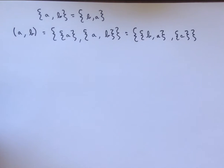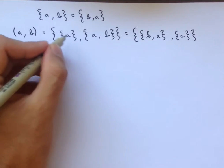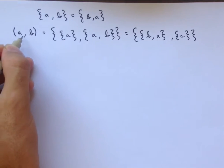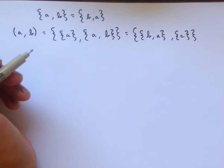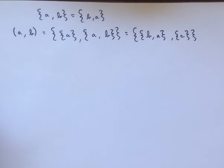By looking at the set and seeing which element is the one that only has one element, and that's the singleton A in both cases. And then looking at that element inside, and so that's going to be A, so we see that A is the first element. And then the second element is the other element that's in the two element set.